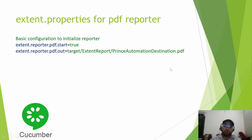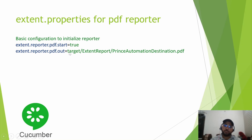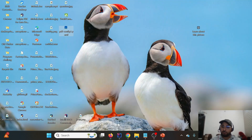Let's jump into the discussion on how to generate the PDF report. As we are already aware, extent.properties is the entry point for Extent Reports. In extent.properties, we need to provide two parameters: the first parameter is to initialize the PDF reporter, and the second parameter is to provide the output location. It is similar to the Spark Reporter — the only change is replacing 'spark' with 'pdf'.